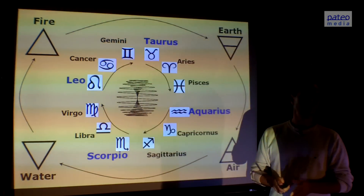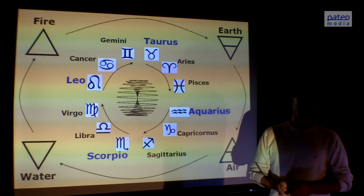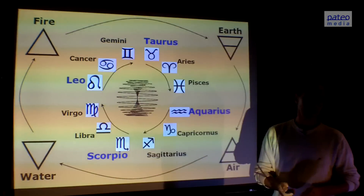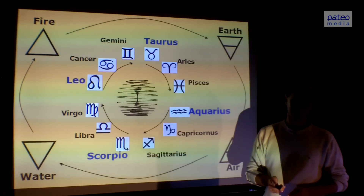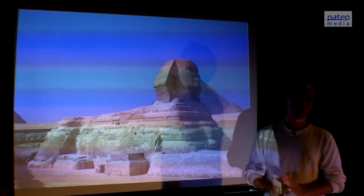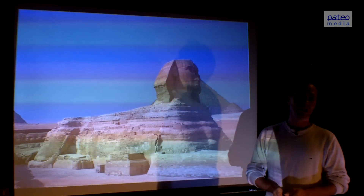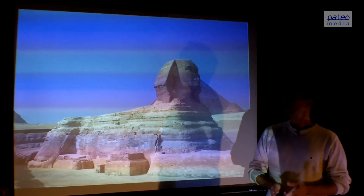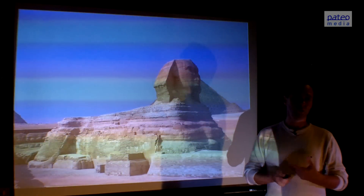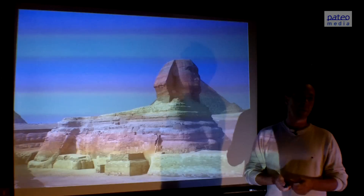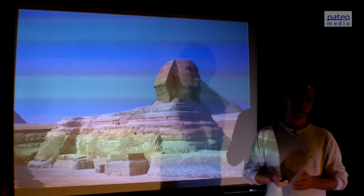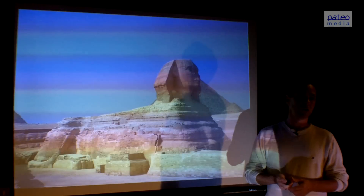Our forefathers knew about this, and that's why they created a giant Leo — a giant lion. I'm talking of course about the Sphinx, which is a huge lion made of stone. The Sphinx was made to help us remember the precession cycle, because it has a very high impact on the consciousness of humanity.